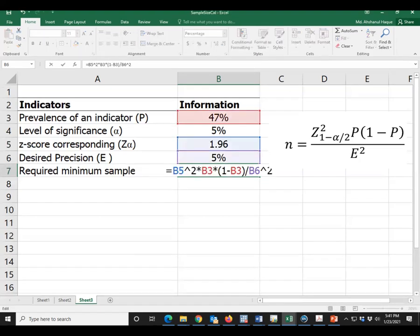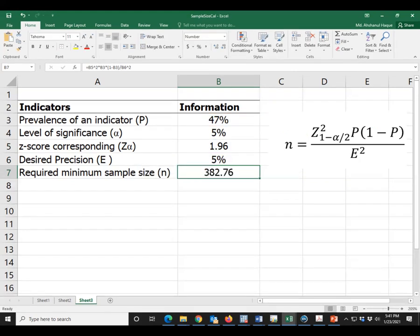This is the excel formula of calculating sample size. Prevalence, Z value and precision. And this is the excel formula. Finally, we got the minimum sample size is 383.